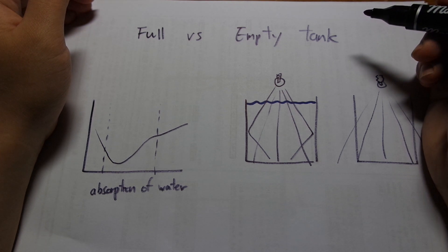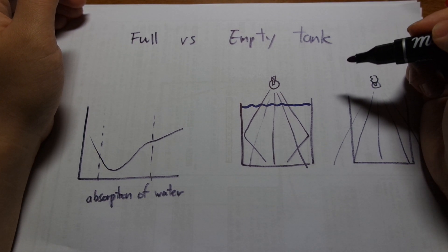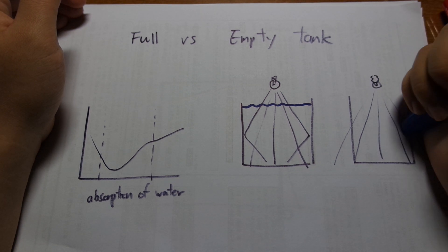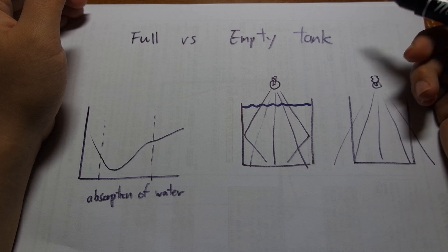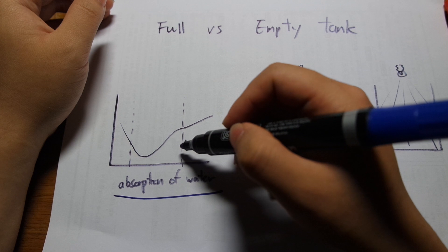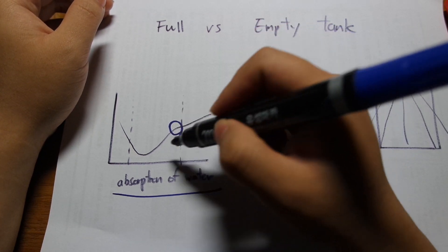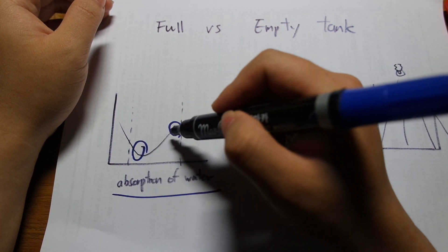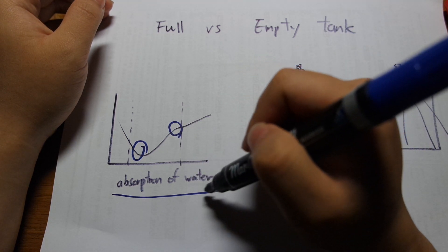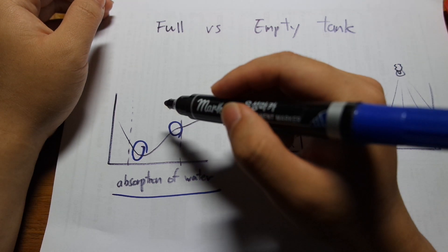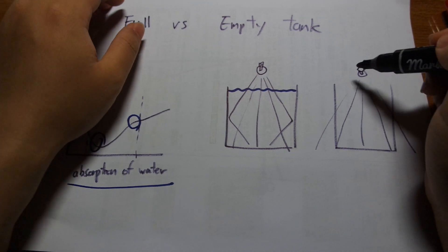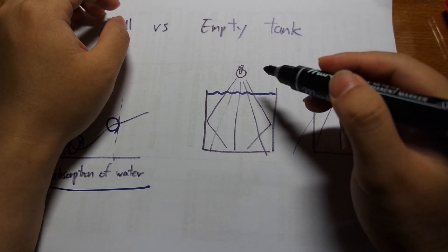And another thing to consider is that some PAR measurements that you see online, they are measured just without water. So having water in the tank can make a big difference. This is the absorption of water. So water will absorb blue light, actually red light much better than blue light. So blue light would penetrate deeper into water, whereas red light will get absorbed. So if you have water, that can affect the PAR value.